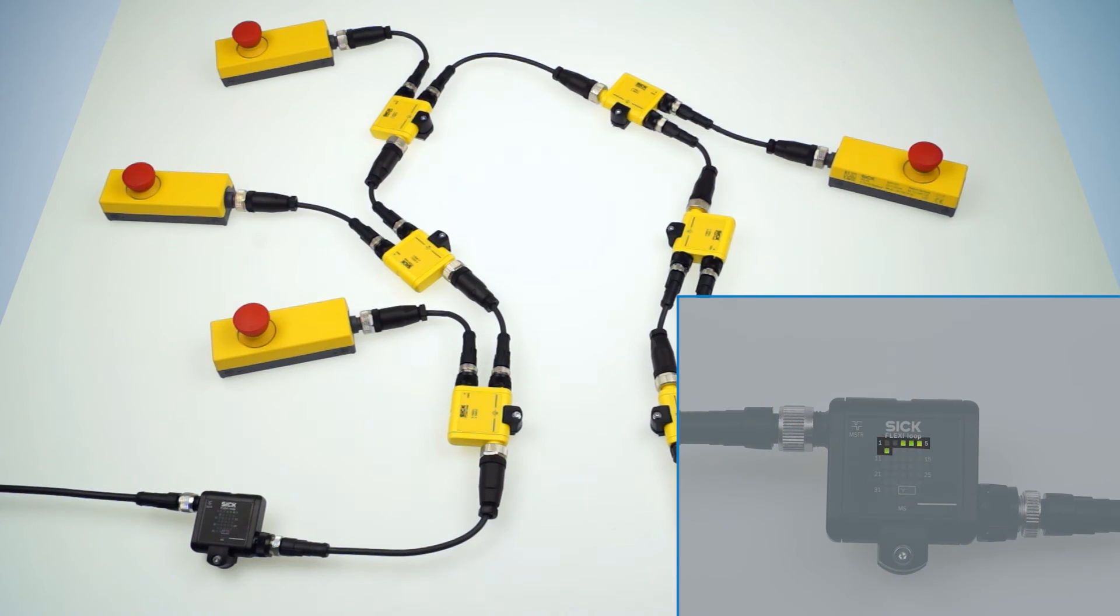With the help of the Node LEDs we can now check the effectiveness of the e-stops. The Node LEDs 3 to 6 are constantly green. Everything is fine here.